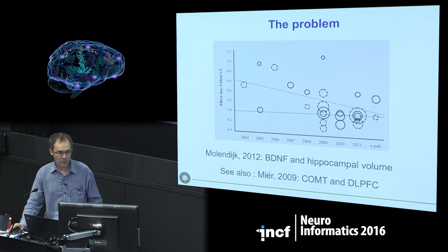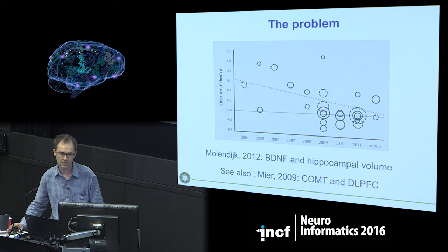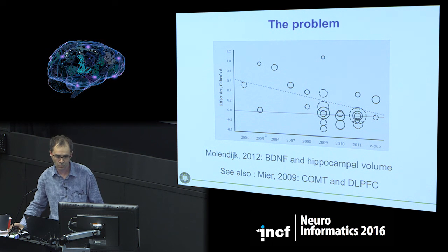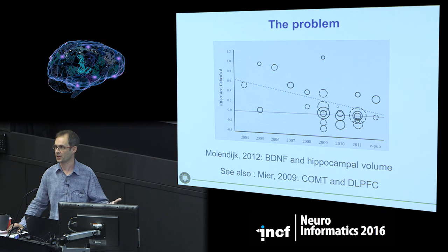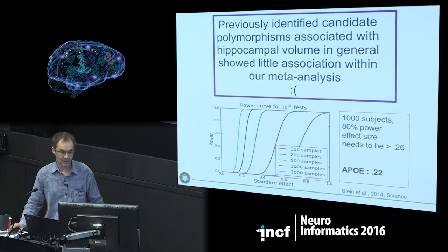The problem is that you're looking at a small group size. In this figure, the size of the circle represents the group size. Early studies show high effect sizes, quite variable but high. As you go along the years with bigger cohorts, the effect size is shrinking. This is the case for the link between hippocampal volume and BDNF. That is the problem.